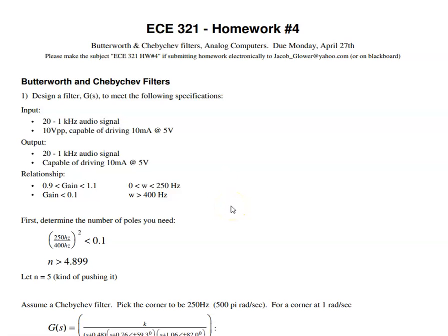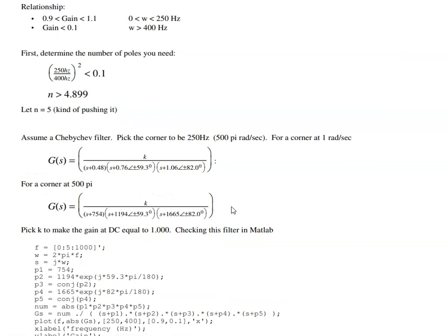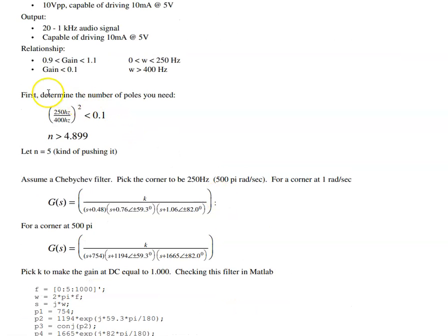Now to do that I first have to figure out how many poles I need. So if I have a single pole, the gain drops as 1 over frequency. If I have n poles, it drops off as 1 over frequency to the n. So I solve for n, it has to have at least 4.8 poles. So let's pick 5 poles.